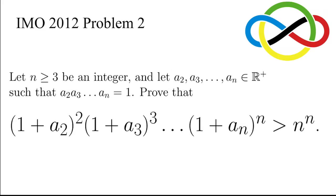Prove that (1+a₂)² times (1+a₃)³ up to (1+aₙ) all to the power n is greater than n to the n.